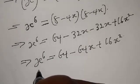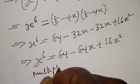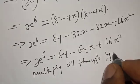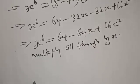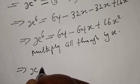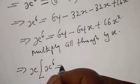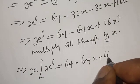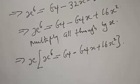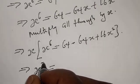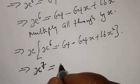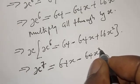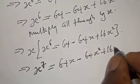So let's multiply all through by x. This implies that x times x raised to power 6, which gives x raised to power 7, is equal to 64x minus 64x squared plus 16x raised to power 3.